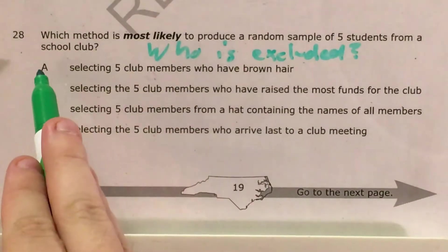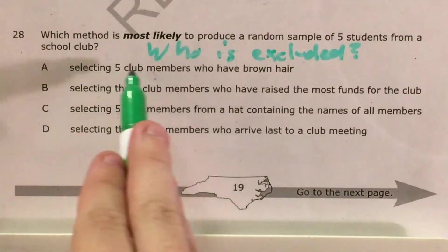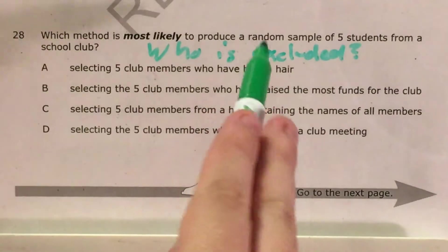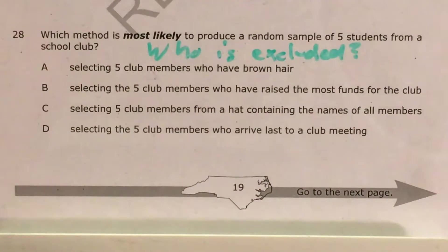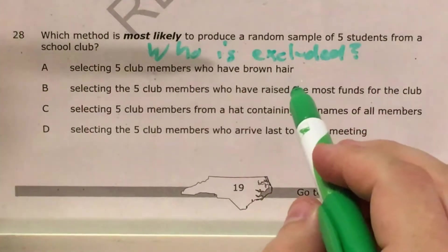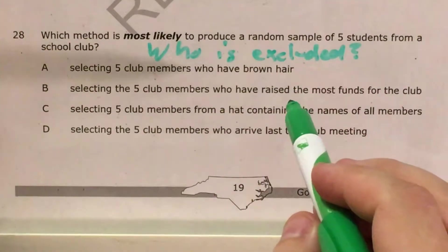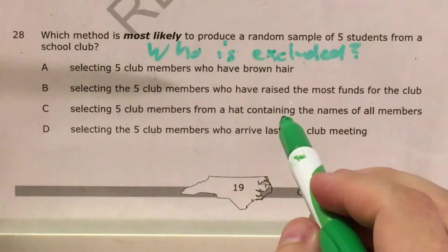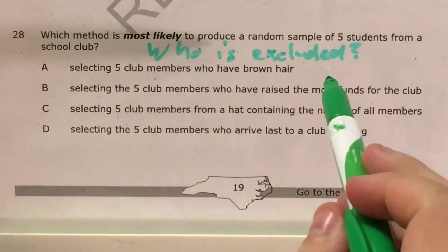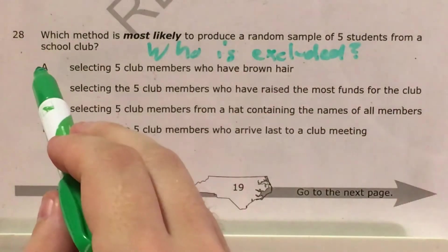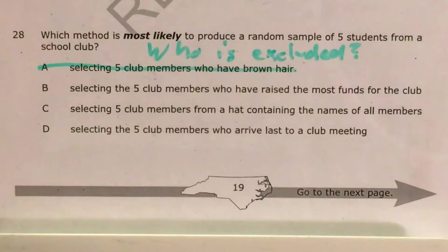So for instance, in choice A, selecting five club members who have brown hair excludes anybody without brown hair — black hair, dyed hair, blonde hair, red hair. It wouldn't necessarily mathematically change the opinions that you could get, but it does exclude the group of people who don't have brown hair. And so choice A is out.